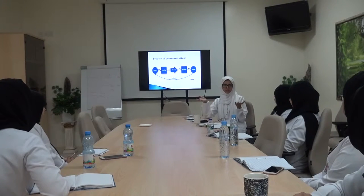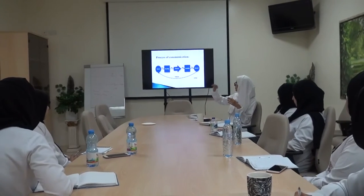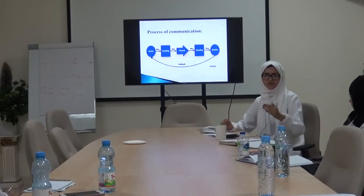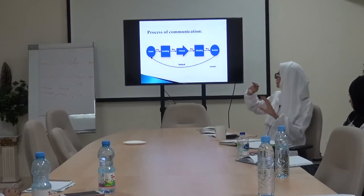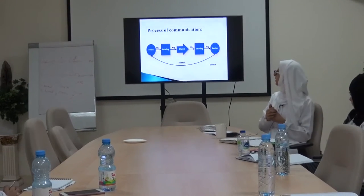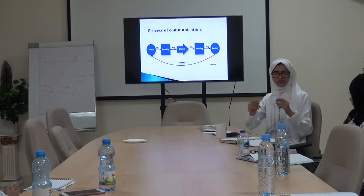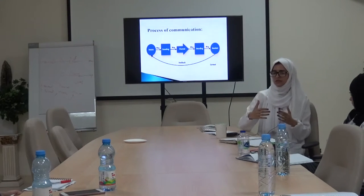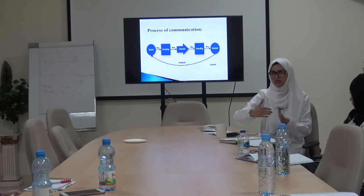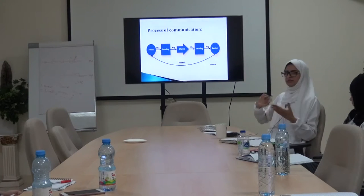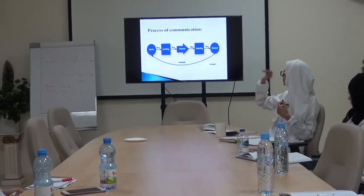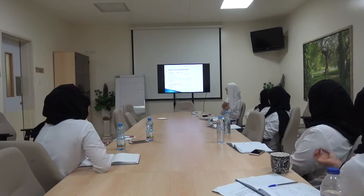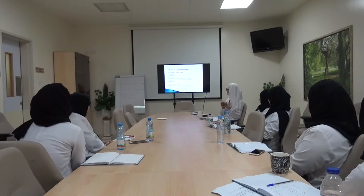In order to communicate with each other, we need certain elements. First, there is the source, which is the sender — the one who passes the message. Then encoding, which means sending or passing the message. There should be a channel, because I cannot communicate with someone far away without one. Then decoding by the receiver. It is a two-way process.